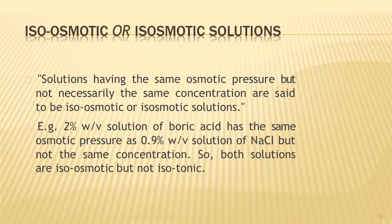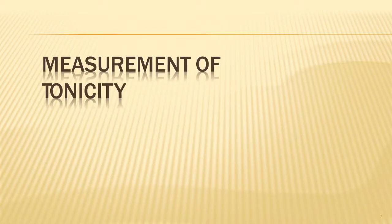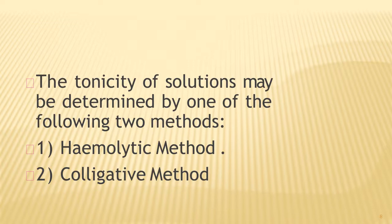There is another term: iso-osmotic solution. This means a solution having the same osmotic pressure but differing in salt concentration. For example, a 2% solution of boric acid has the same osmotic pressure as 0.9% sodium chloride, but they differ in concentration. This is called an iso-osmotic substance or solution.